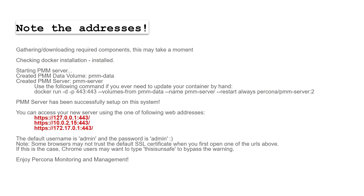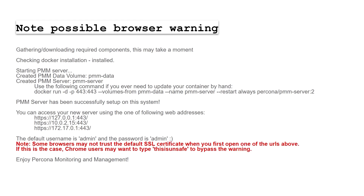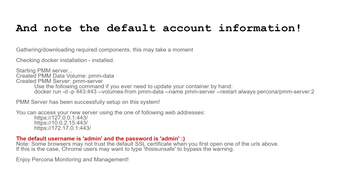At the top, you'll see that it's the localhost, 127.0.0.1. Also notice that it tells you that some browsers, like Chrome, do not like the default SSL certificate. You can add your own, but if you're just testing this and you're in a safe environment, you can bypass the warning and take the 'this is unsafe' route. Also notice that the default username and password for the PMM server is admin/admin.